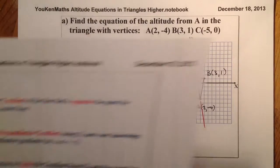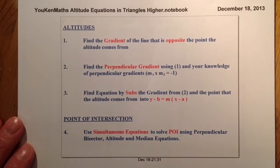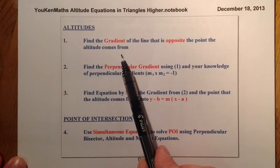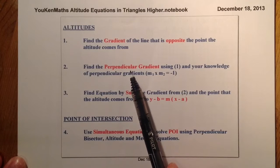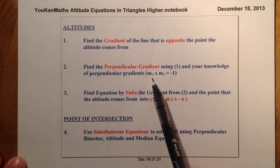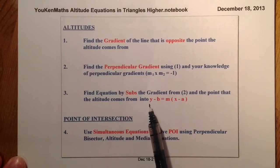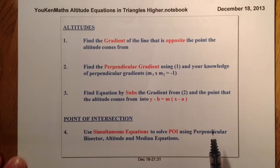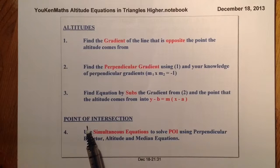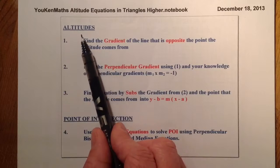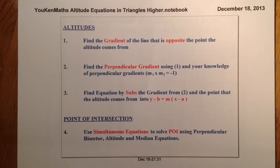So that was it graphically. For altitudes, it's a three-step process. First, find the gradient of the line opposite the point the altitude comes from — the other side of the triangle. Second, flip and change that gradient to get the perpendicular gradient, since two gradients multiplied together equal -1 if perpendicular. Third, substitute the perpendicular gradient and the given point into the equation of a straight line. Beyond that, you would normally find the point of intersection using simultaneous equations by elimination.